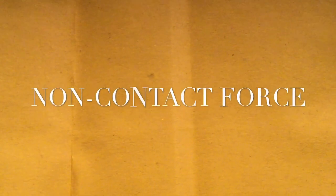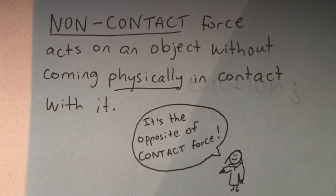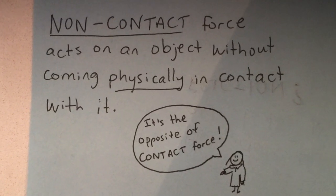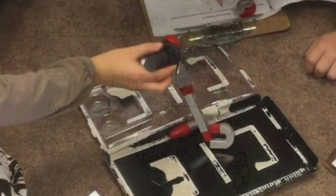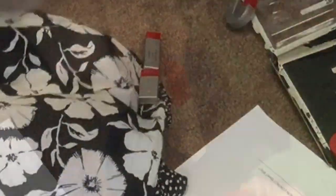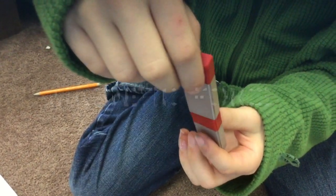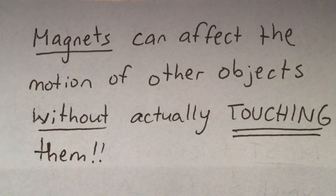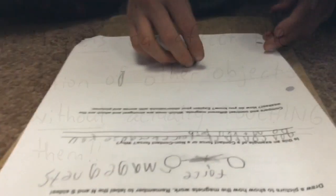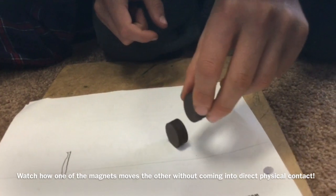Now let's talk about non-contact force. A non-contact force acts on an object without coming physically in contact with it. It's the opposite of contact force. One example of a non-contact force is magnetic force. Magnets can affect the motion of other objects without actually touching them. Watch how one of the magnets moves the other without coming into direct physical contact.